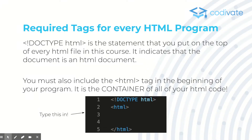Here are some required tags for every HTML program. The DOCTYPE HTML is a statement that you put at the top of every HTML file. It indicates that the document is an HTML document, and also indicates that this is HTML5 and not any other past HTML types. This is pretty much the standard.